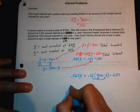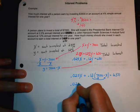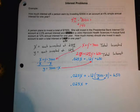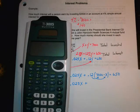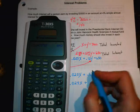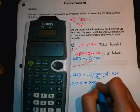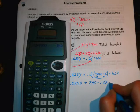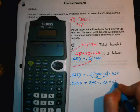And then we distribute through. So, we have 0.025X plus, let's pull out our calculator. 0.12 times 7,000. We have 840 minus 0.12X, equals 650.